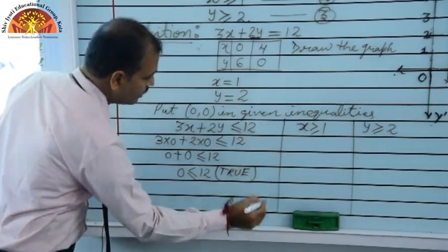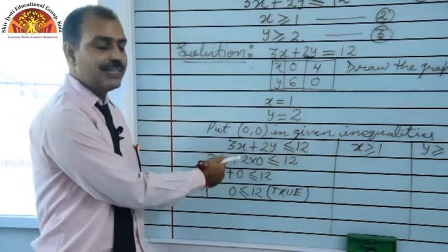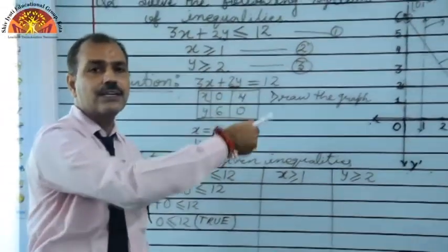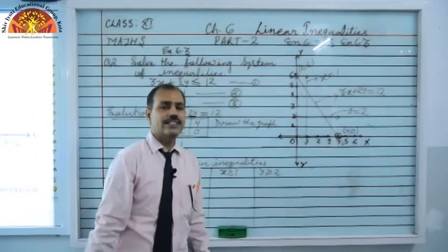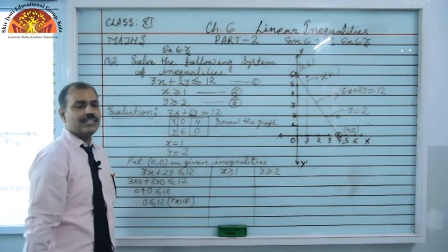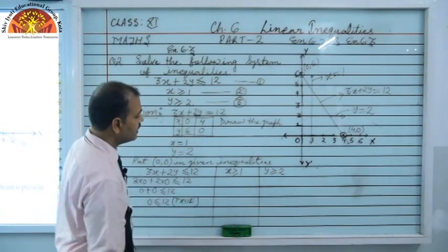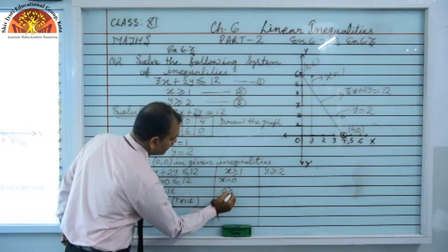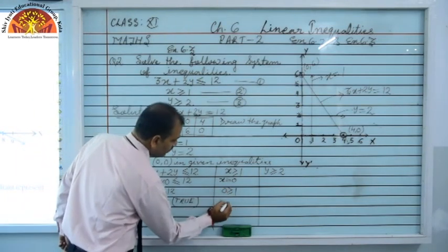So checking all three inequalities: the first inequality 3x + 2y ≤ 12 is true at origin — so shade the origin side. The second inequality x ≥ 1 is false at origin — so shade the other side (away from origin, to the right). The third inequality y ≥ 2 is also false at origin — so shade above the line y = 2.